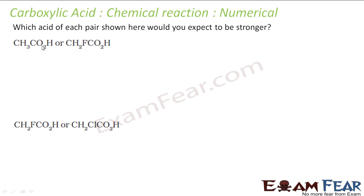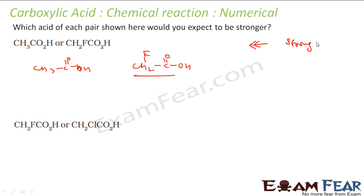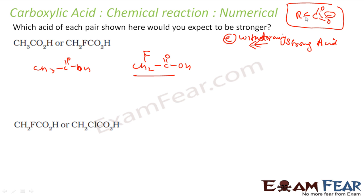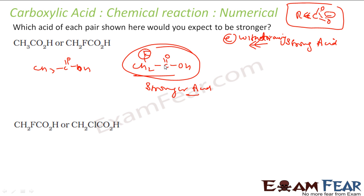Let's take some numericals. Which of the acid pairs would be more stronger: CH3COOH or CH2F-COOH? As I said, if it is an electron withdrawing group, that makes the acid stronger. The product R-COO minus — the more stable the product, the stronger the acid. Fluorine is an electron withdrawing group, so CH2F-COO minus is more stable, meaning CH2F-COOH is a stronger acid.